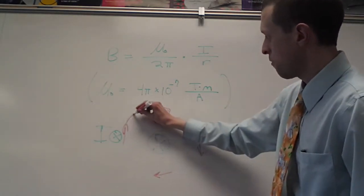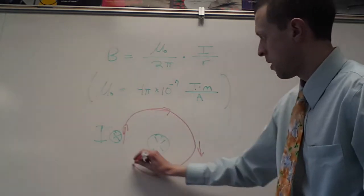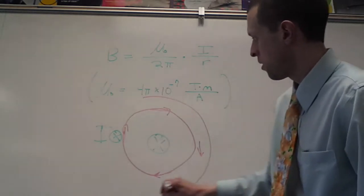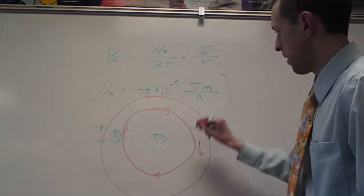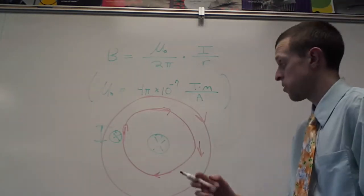And so our magnetic fields are just going to form these circles around the wire, going clockwise this way.